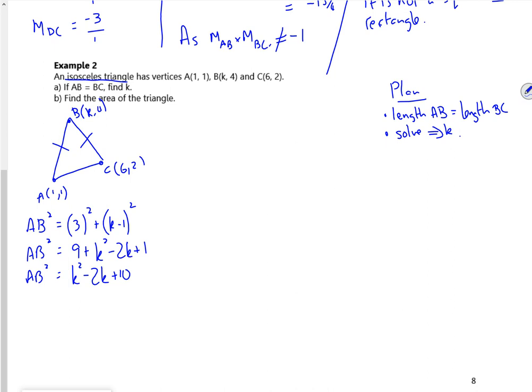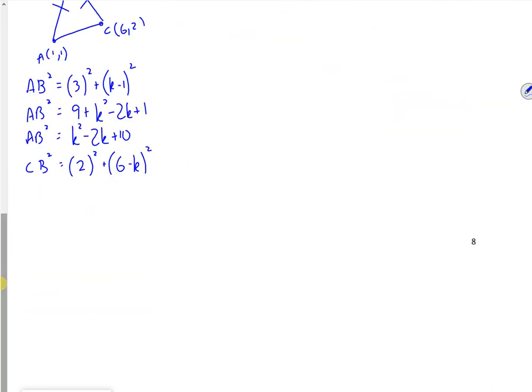Right, so let's have a look at CB squared. So going up is 2 squared, so it's the difference between 4 and 2. Going across will be 6 minus K. So you'll do right point minus left point. So CB squared will be 4 plus 36 minus 12K plus K squared. So CB squared will be K squared minus 12K plus 40.